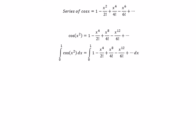Now we do the integral on the right and we get x minus x to the power of 5 over 5 multiplied by 2 factorial, minus x to the power of 9 over 9 multiplied by 4 factorial, and so on.